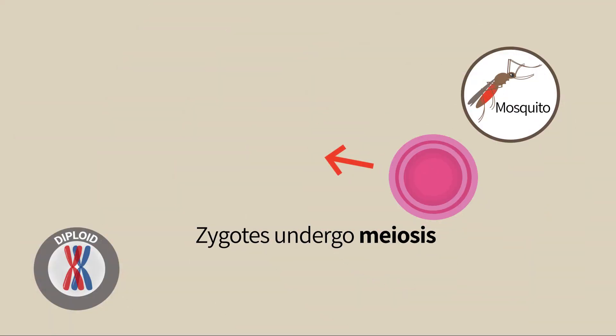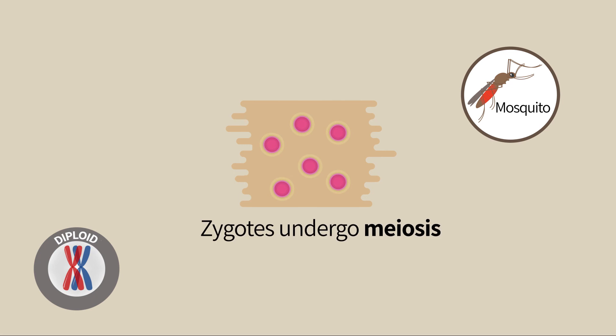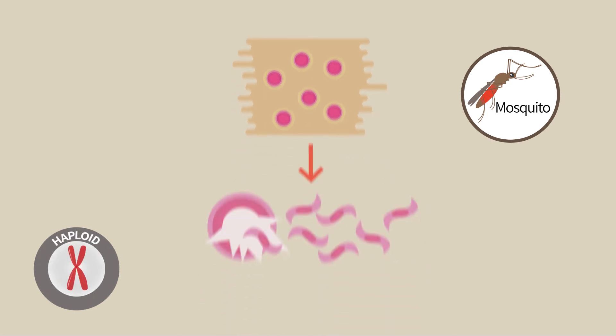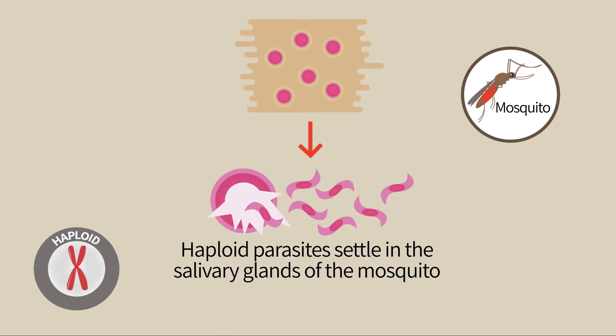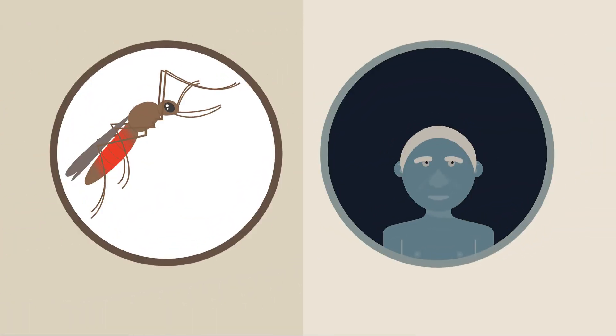The diploid parasites undergo meiosis so that we get again haploid parasites. These move to the mosquito salivary glands and from there to their next victim.